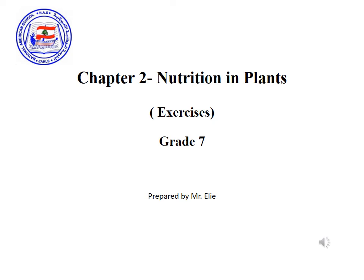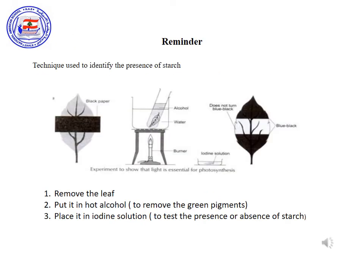Hello grade 7 students. Today I'm going to apply what we studied in the previous video in two exercises. Please write the notes and the solution on your copybook. A small reminder about the technique used to identify the presence of starch: first we take the leaf, then we put it in hot alcohol and in iodine solution.